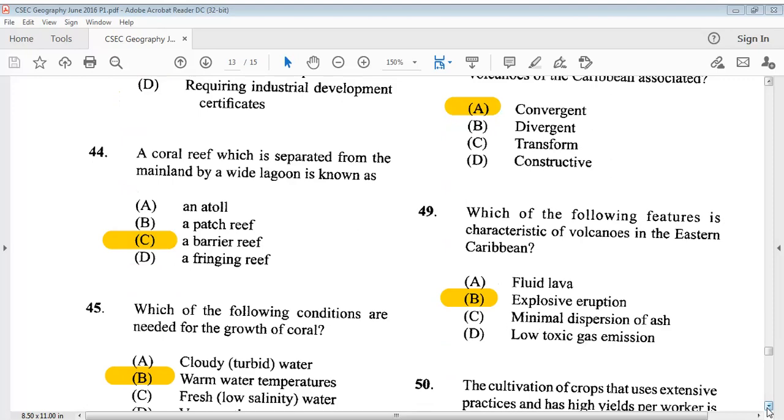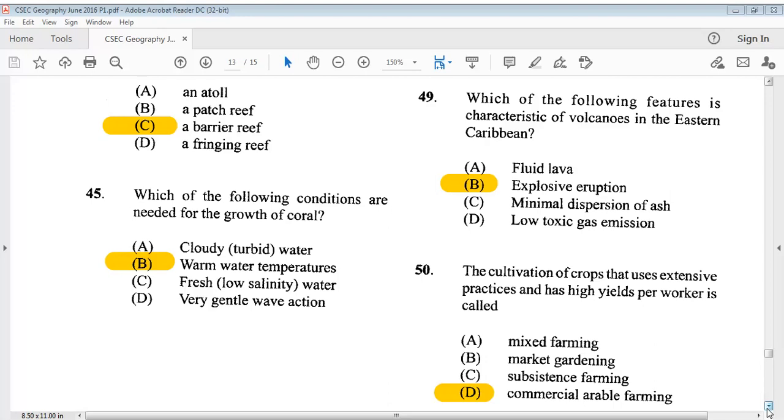Question 44: A coral reef which is separated from the mainland by a wide lagoon is known as? The answer is C, a barrier reef. Question 45 says, which of the following conditions are needed for the growth of coral? The answer is B, warm water temperatures.